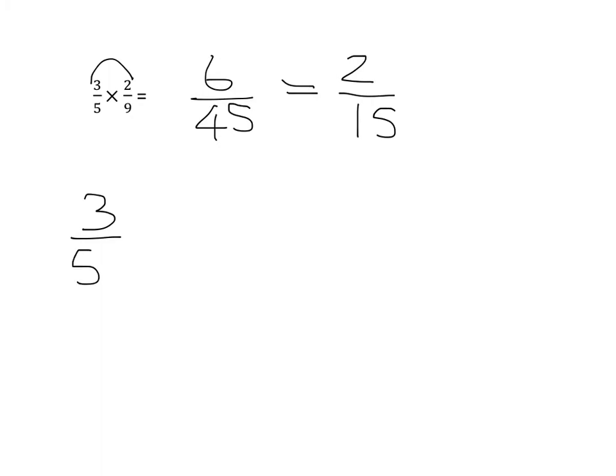If we have three-fifths times two-ninths, we know that what we have to do is multiply the numerators together and then multiply the denominators together. But we also know that when we have a fraction like this, what we do to the bottom divide or times, we can do to the top divide or times by the same thing.